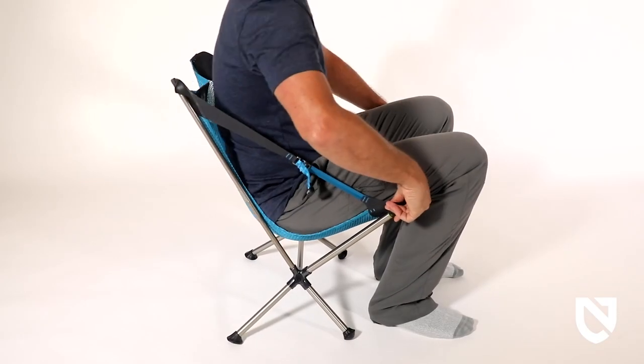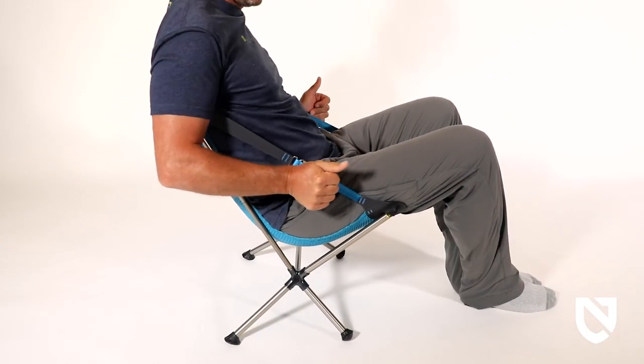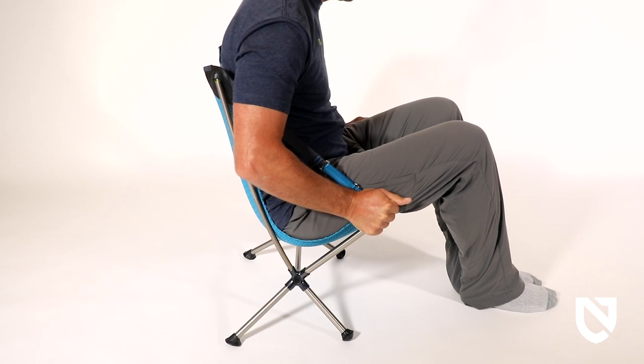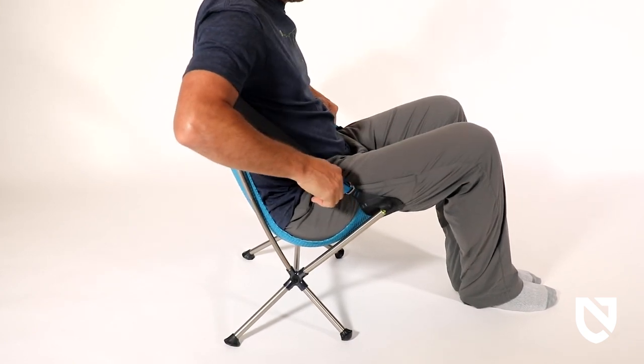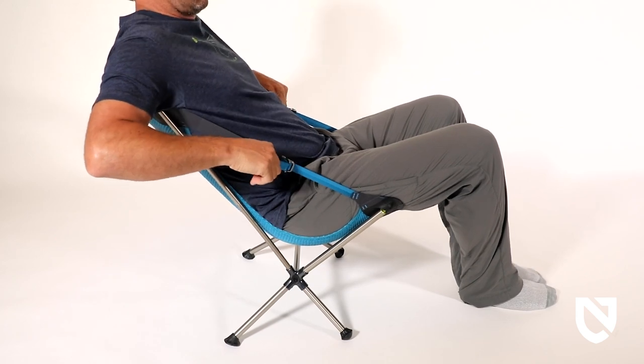Once seated, locate the handles on either side of the chair and either push the handles forward while sitting up for a more upright position, or pull the handles back when you want to recline and relax.